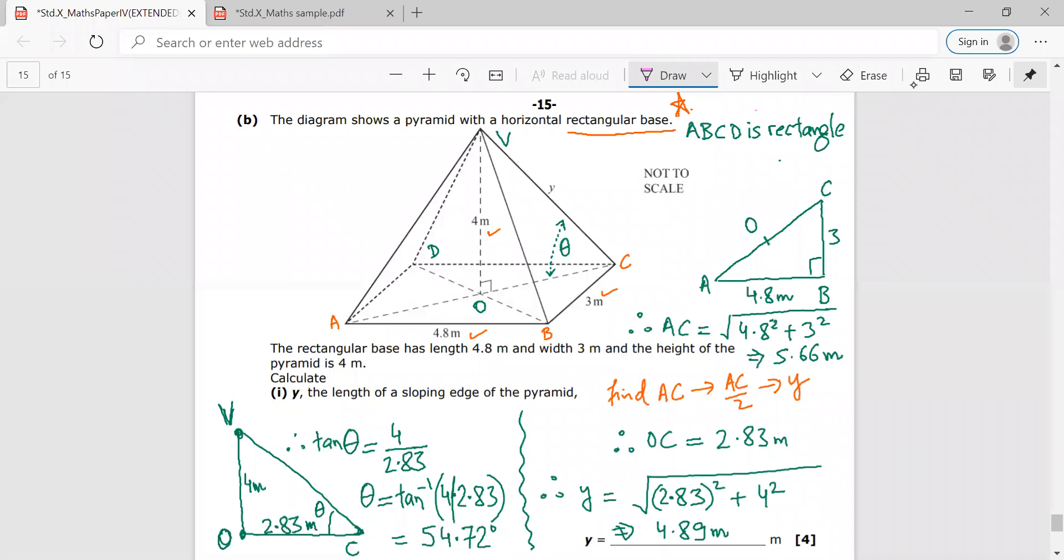Okay, Mr. Rudhar, this is a pyramid which has a horizontal rectangular base. Now first let us understand the meaning of horizontal rectangular base. If we consider A, B, C, D to be the base of the pyramid, then A, B, C, D would be a rectangle.